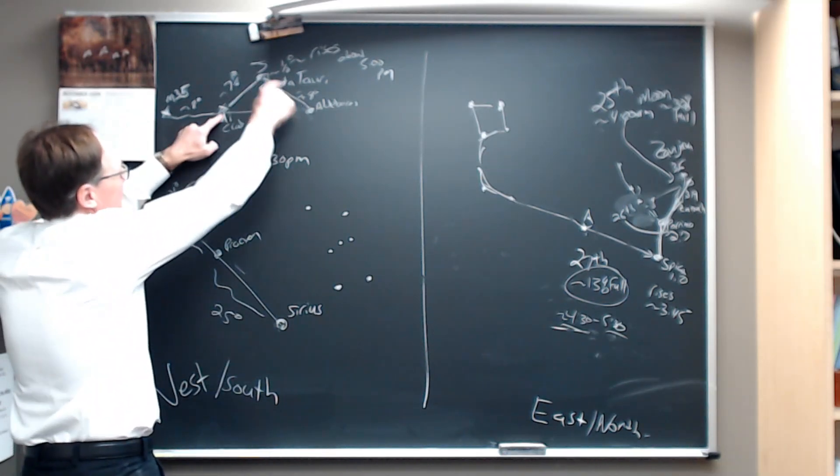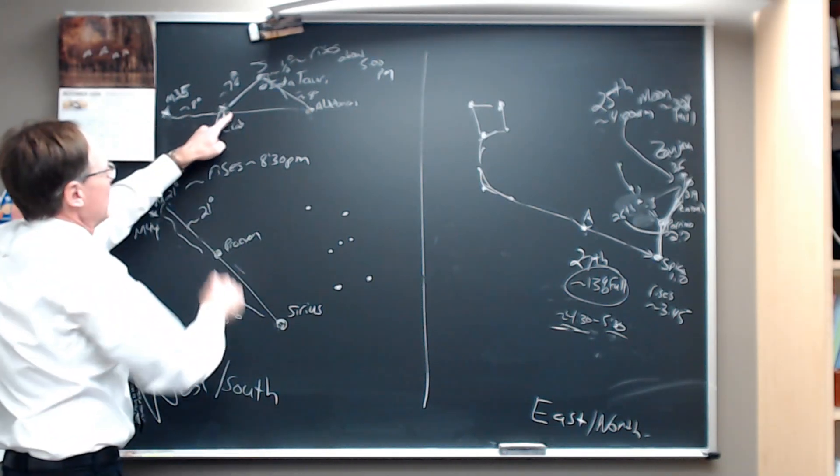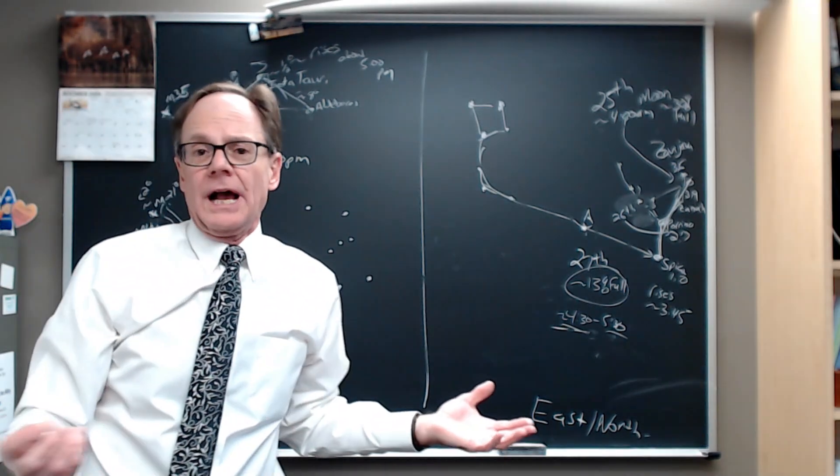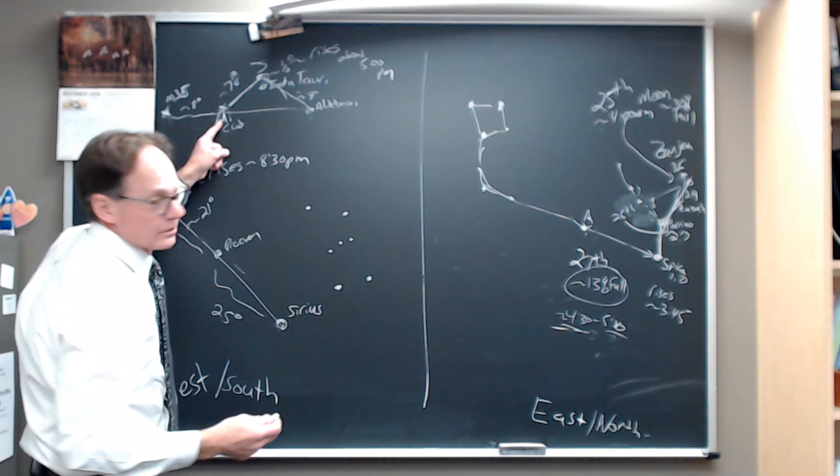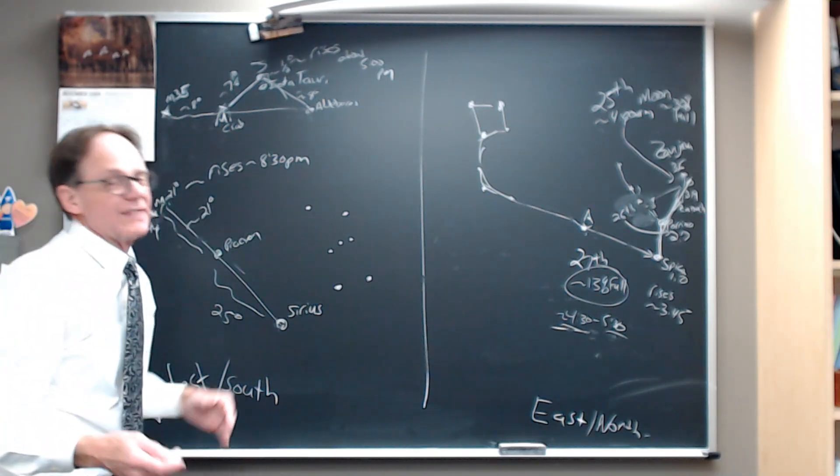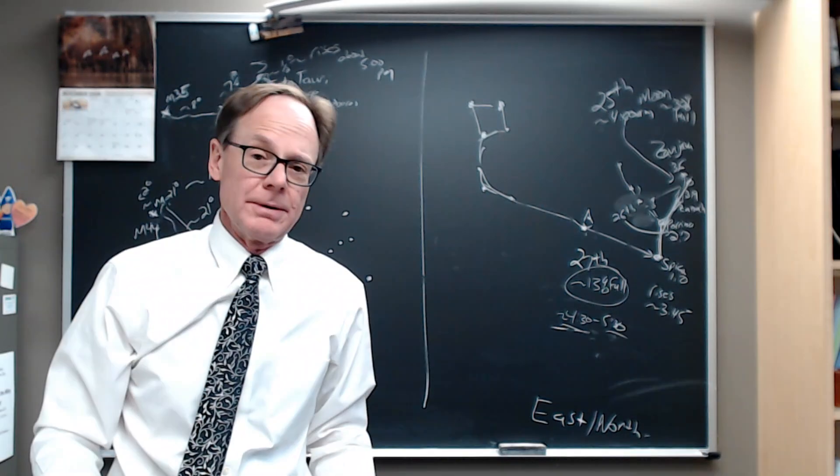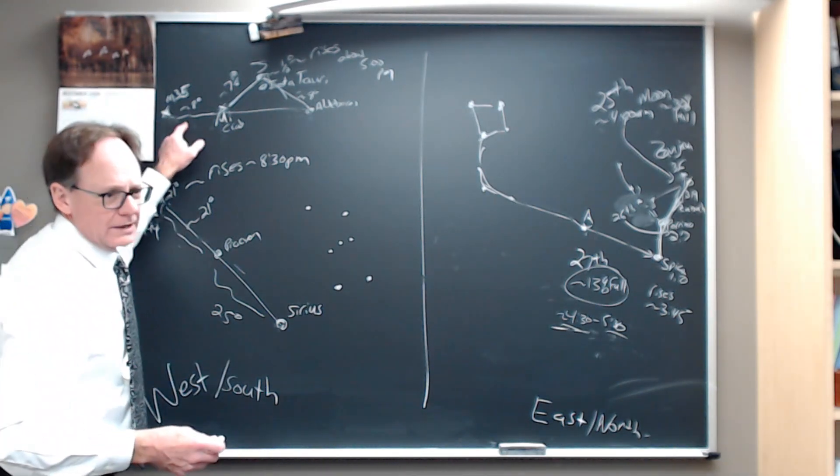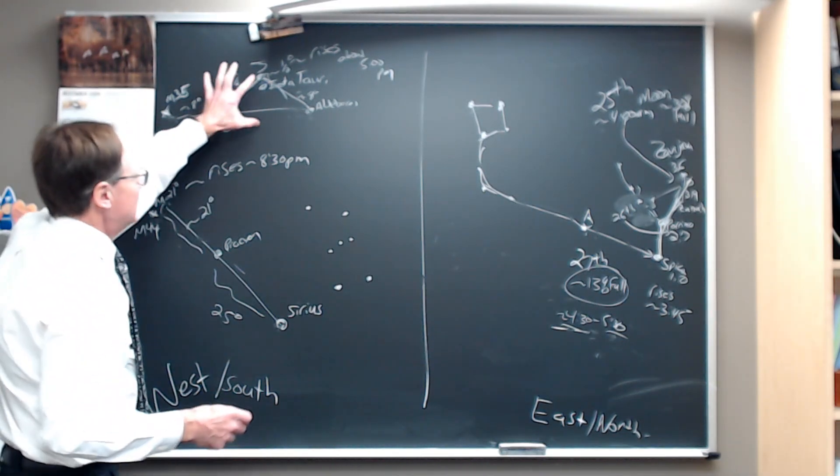That same 8 degrees that separates these objects, you move straight on over and you're going to come to M35, a beautiful open star cluster. That might help you triangulate your way through the Crab Nebula as well, because M35 is a lot easier to see. You're going to see that in a pair of binoculars. A small telescope is going to be beautiful.